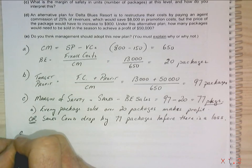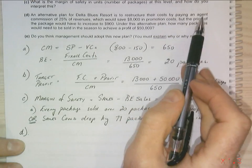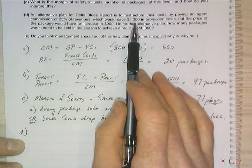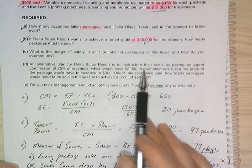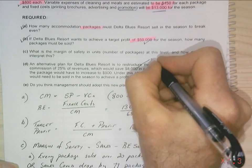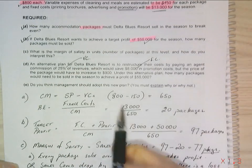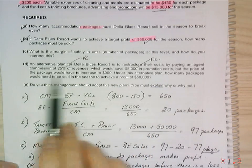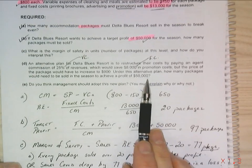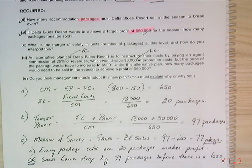Now D is the next bit. An alternative plan for Delta Blue Resorts is to restructure their costs by paying an agent a commission of 25% of revenues, which would save $8,000 in promotional costs. Now we saw from earlier that my promotional costs are part of my fixed costs. So that's a fixed cost. This is a variable cost. So under the alternative plan, how many packages would need to be sold in a season to provide a profit of $50,000?